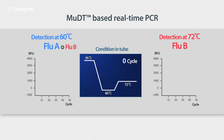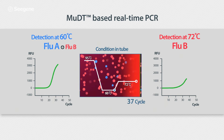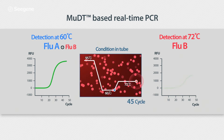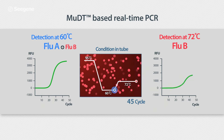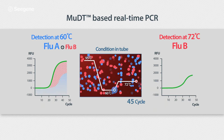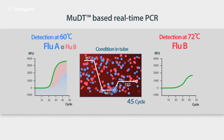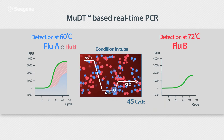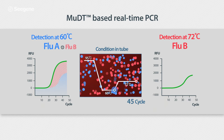Now, we selected two detection temperatures: 60 degrees Celsius and 72 degrees Celsius. These are the temperatures where fluorescent signals will be collected. When we examine the signal intensities, at 60 degrees Celsius, signals from both Flu A and Flu B are overlapping, whereas only the signal for Flu B can be read at 72 degrees Celsius.